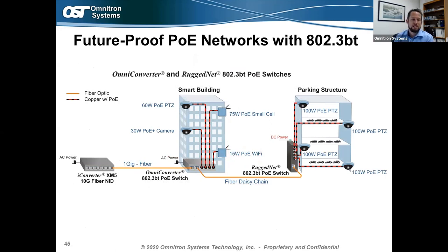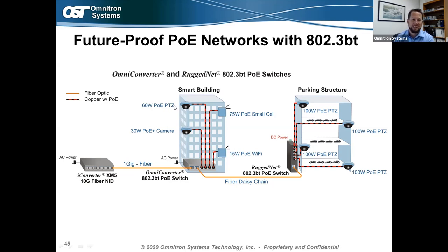An important consideration when selecting PoE devices is future-proofing. You can do this by selecting Omni Converter or RuggedNet switches that support the 802.3bt standard. As you add more PoE-powered devices — starting with 15W Wi-Fi, then 30W cameras, then 60W PTZ cameras or 75W small cells — a BT switch supporting up to 100 watts per port ensures your network is ready for whatever devices you connect in the future, whether indoors or in outdoor applications like the parking lot with DC-powered RuggedNet switches.